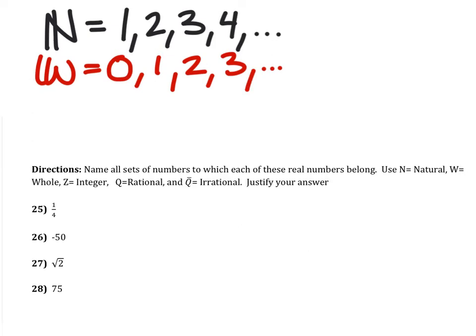The next set of values is the integers, which is represented by a nice fancy I. It includes all of the whole numbers such as 0, 1, 2, and so forth, but it also includes their opposites like negative 1, negative 2, and so forth.